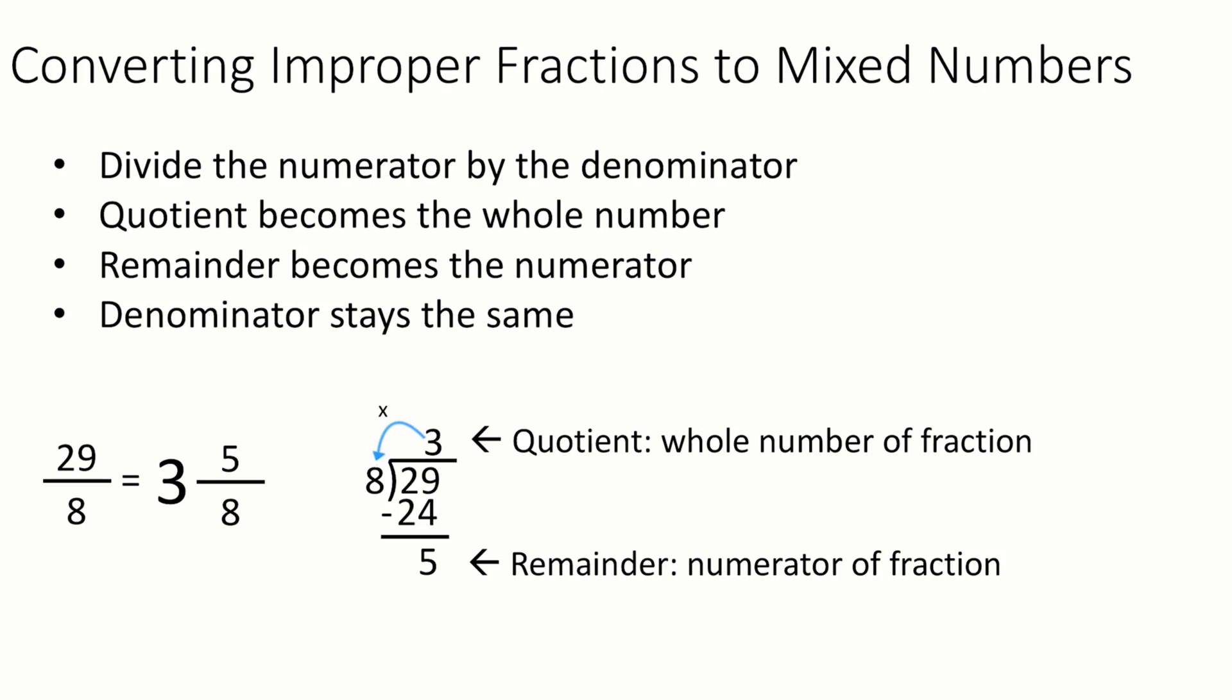If you find the long division algorithm a little bit confusing here, you can also do this by counting out multiples of 8. You need to get the closest multiple of 8 to 29, but that doesn't go over. So we'd have 8, 16, 24. So that's 3 eighths. So then what's left from 24 to 29 is 5. And so we get the same idea of quotient and remainder, but we don't have to use a long division algorithm if you're not comfortable with that.